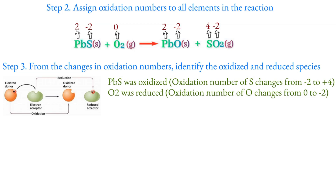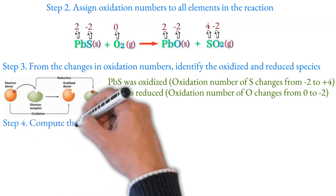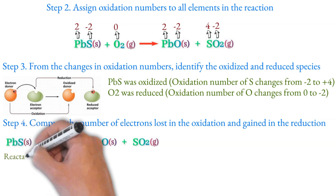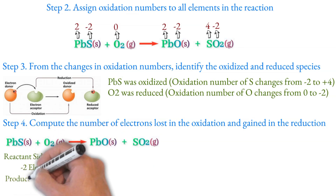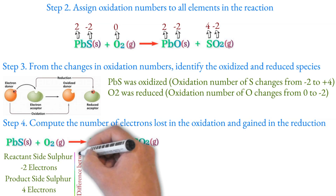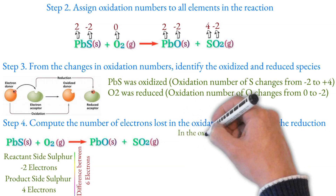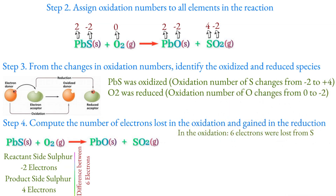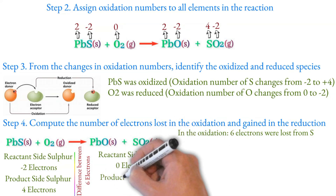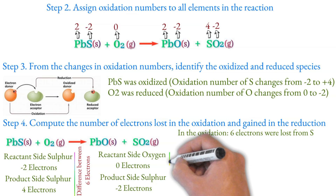Step 4: Compute electrons lost and electrons gained. This is the most important step. Oxidation involves a large number of electrons; sulfur loses electrons. Oxygen gains electrons. Oxidation involves 16 electrons lost for sulfur, and the electron gain goes to oxygen.